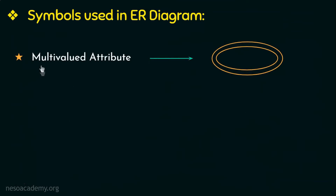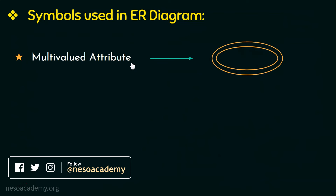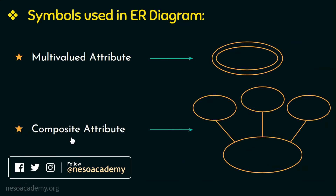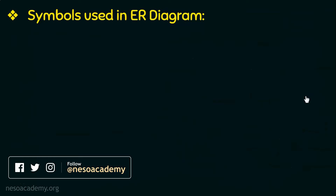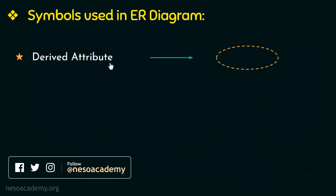The multi-valued attribute, which contains a set of values for a particular entity, is represented by a double oval. Then we have the composite attribute, which is an attribute that can be divided into further sub-attributes. The derived attribute is an attribute whose value is derived from another attribute, and it is represented by a dashed oval.